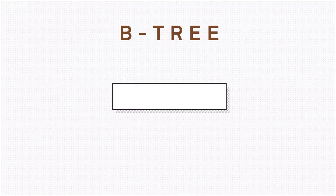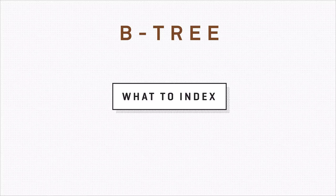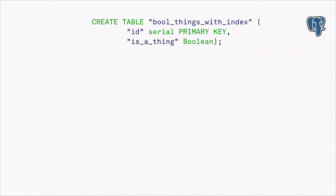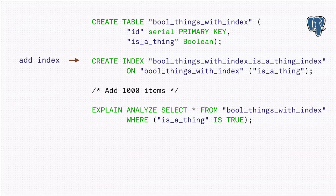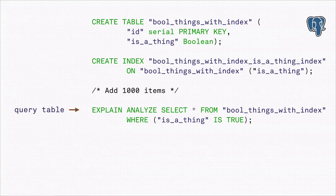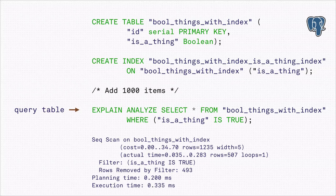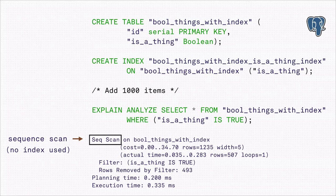Now, after we've seen how an index tree is assembled, we can better decide what to index. For instance, if we add an index to a boolean column, the tree will contain two large branches. The storage engine would still have to traverse lists of pages on the true and false sides. The index doesn't really help here.